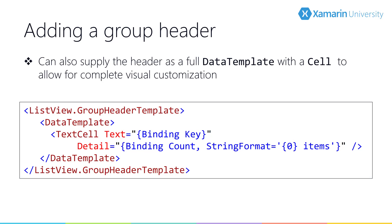The second way to define the header is the GroupHeaderTemplate property, assigned to a data template with a cell definition just like a normal row definition — you can use any cell type including a view cell. The binding context for the header will be the group header object representing the group. This example uses the key from the grouping object along with the count property inherited from the ObservableCollection base collection.